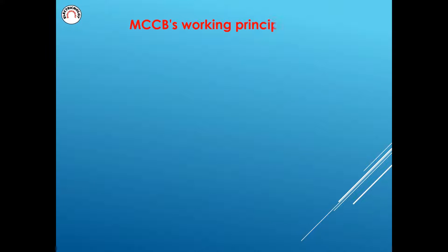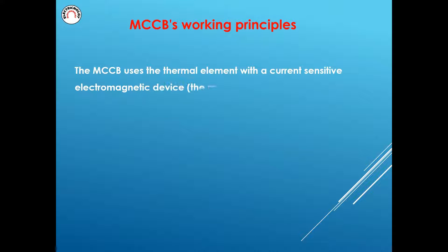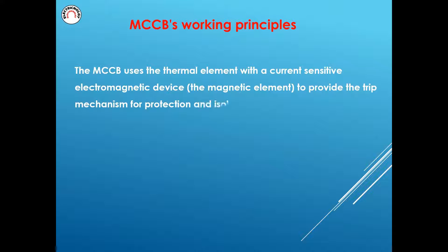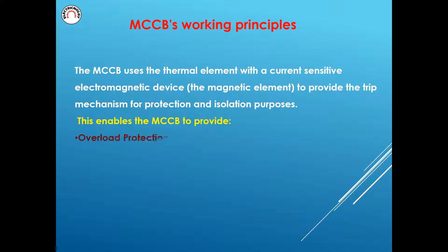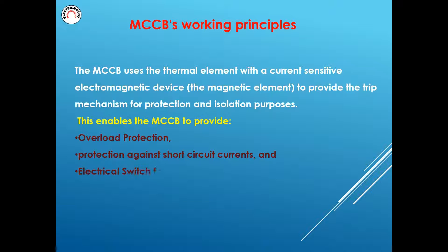MCCB Working Principles. The MCCB uses the thermal element with a current-sensitive electromagnetic device — the magnetic element — to provide the trip mechanism for protection and isolation purposes. This enables the MCCB to provide overload protection, protection against short circuit currents, and an electrical switch for disconnection.